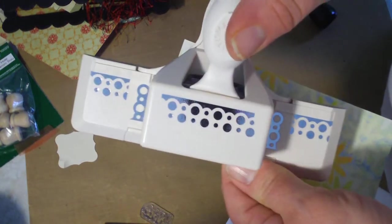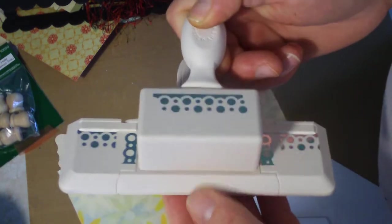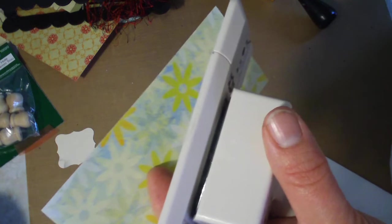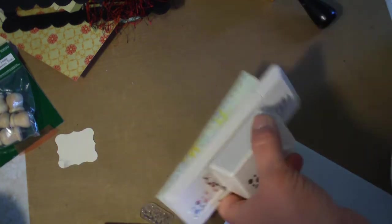This is just a Martha Stewart punch. You could use any border punch for this. I like the Fiskars ones better because they actually have the center point marked on the punches. I just got this punch so I don't have this one marked yet, so this would be a great opportunity to show you guys how to do this.